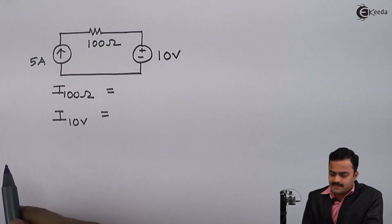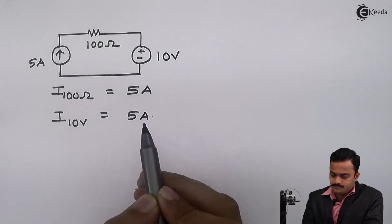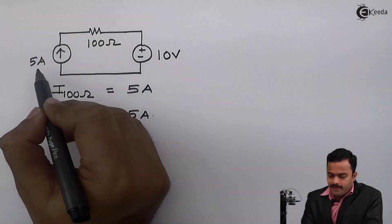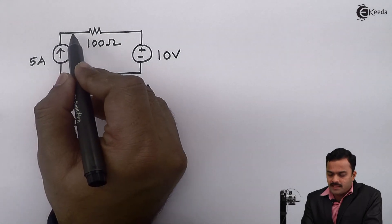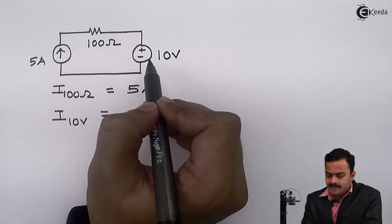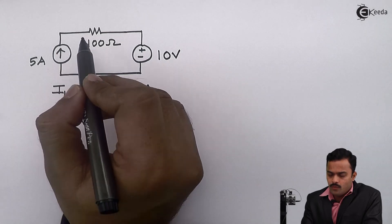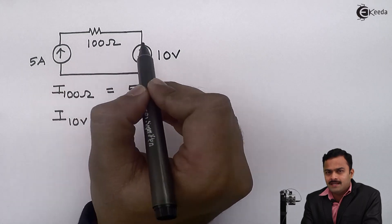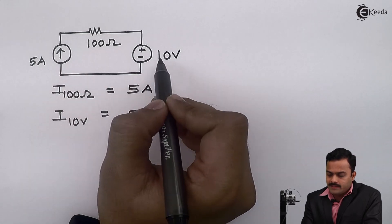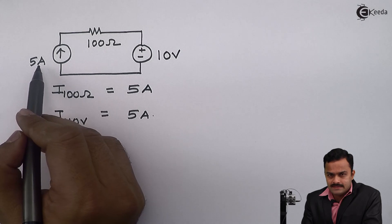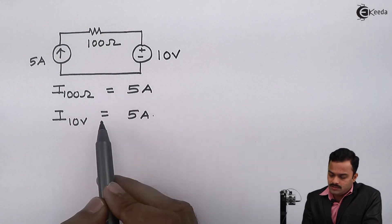The answer will be very simple — in both cases I will get 5 ampere. The concept is that whenever a current source is connected, it will fix up the value of current flowing through the elements which are connected in series with that current source. So in this case, 5 ampere decides the current through all elements in series: the 100 ohm and the 10 volt are both connected in series with the 5 ampere source, hence current through each is 5 ampere.